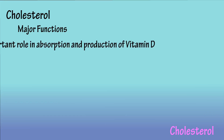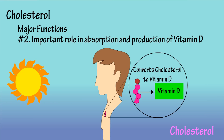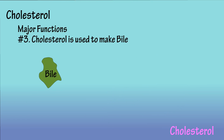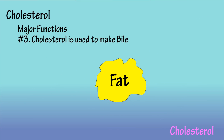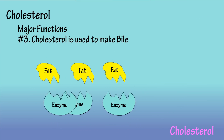The second major function of cholesterol is that it plays an important role in the absorption and production of vitamin D. Vitamin D is created when ultraviolet rays of the sun act upon a form of cholesterol. The third function of cholesterol is that it is used to make bile. Bile breaks down fat into small droplets, so digestive enzymes can come in and do their jobs.